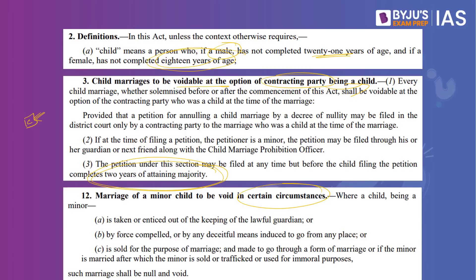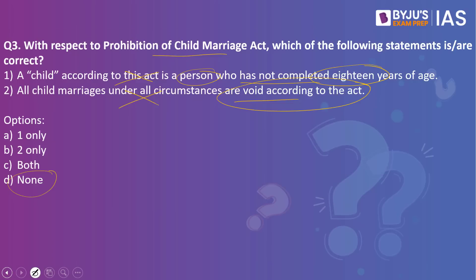When is a child marriage void? Where a minor is taken or enticed out of the keeping of a lawful guardian by force or deceitful means, induced to go from any place, sold for the purpose of marriage, or if the minor is married and then sold, trafficked, or used for immoral purposes — such a marriage shall be null and void. Remember: void means invalid from the very start, while voidable means a specific condition must be met. Since not all circumstances make it void, the second statement is wrong.